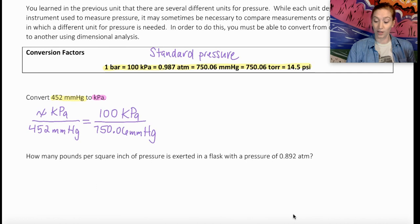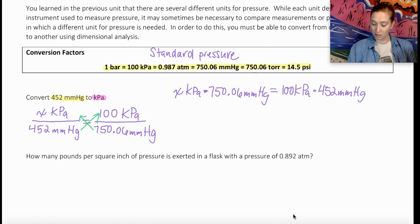So what I'm going to do here is solve for X. I'm going to cross multiply and divide. I'm going to go ahead and show my work here that I'm going to get X kilopascals times 750.06 millimeters of mercury equals 100 kilopascals times 452 millimeters of mercury. Get X by itself. I'm going to divide both sides by that 750.06 millimeters of mercury. And then I want to show how these cancel.